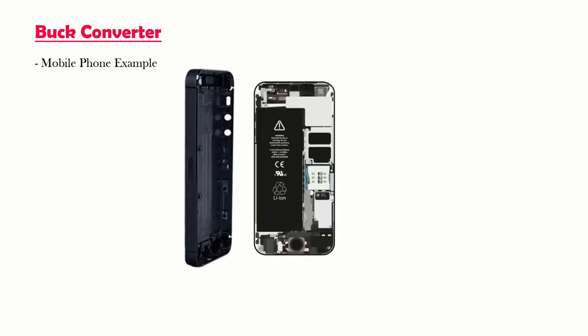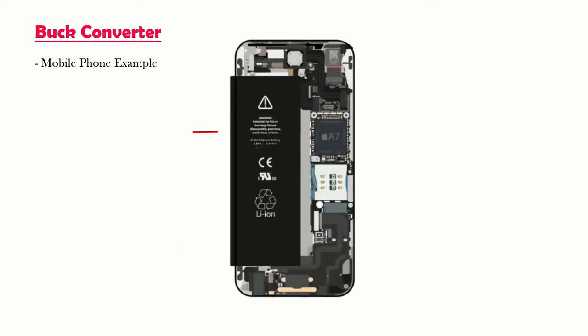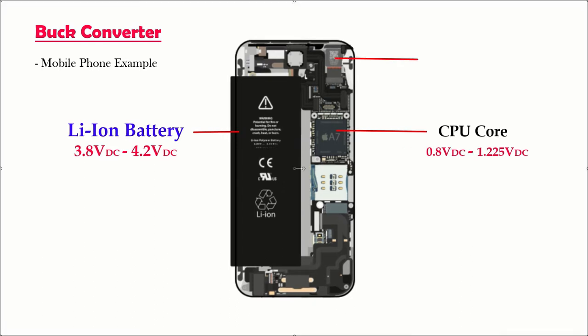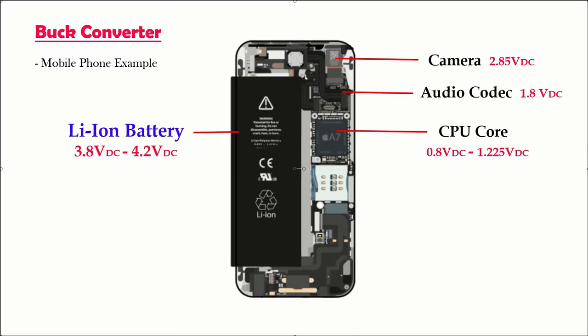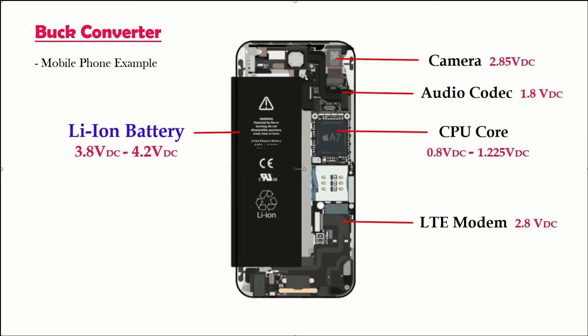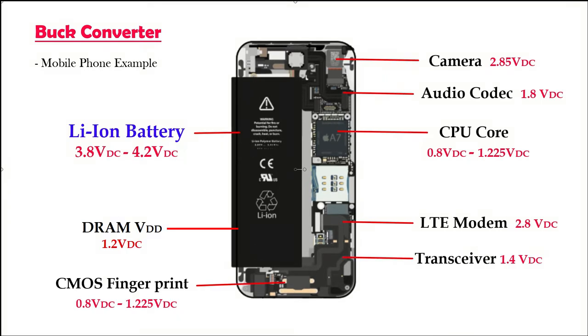For example, in a mobile phone there is a battery that provides a DC voltage of around 3.8 volts that is used to run the CPU core which needs typically around 1 volt. The camera needs around 2.85 volts, the audio codec needs about 1.8 volts, 4G LTE antenna modem needs around 2.8 volts, and so on. But the question is how the mobile phone managed to lower the voltage from 3.8 volts to this versatile range of DC voltages.